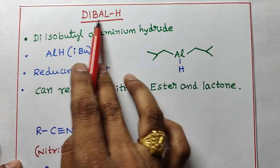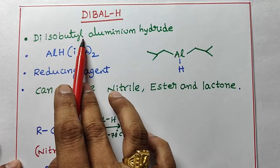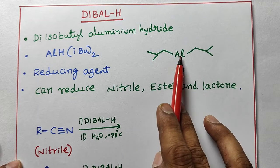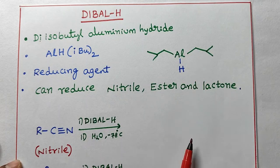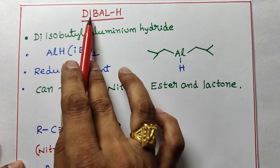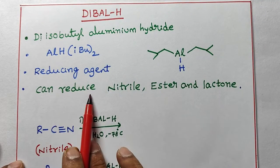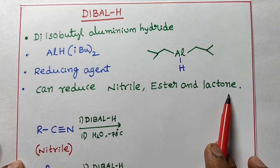Full form of DIBAL-H is diisobutyl aluminum hydride. In DIBAL-H, aluminum is bonded to one hydrogen and two isobutyl groups. What is the purpose of DIBAL-H? DIBAL-H can reduce nitrile, ester, and lactone.